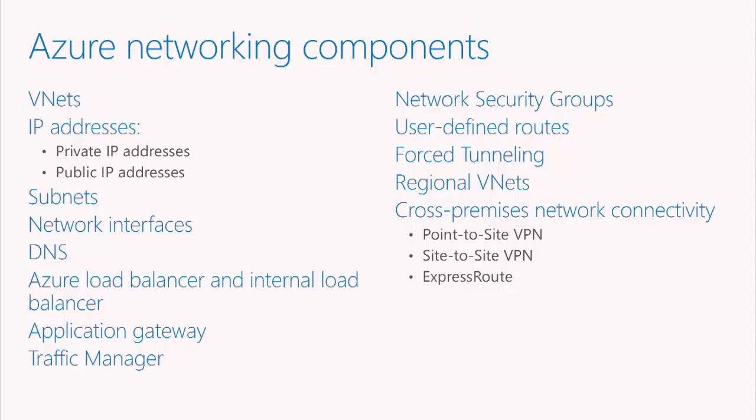Subnets work just like physical subnets. We also have network interfaces, which are the method you use to configure IP addresses on virtual machines. You don't go into the VM and set the IP — you create a network interface that contains an IP and attach it to a virtual machine. We have DNS, Azure's own version of traditional domain name services. You have load balancers, application gateway, and traffic manager, all of which distribute load across multiple instances. We have network security groups, which provide rules governing what types of traffic — port and protocol — can move between endpoints within VNets. We also have custom routing, tunneling, and the notion of connecting multiple networks together through VPN technologies, regional VNets, or Express Route.